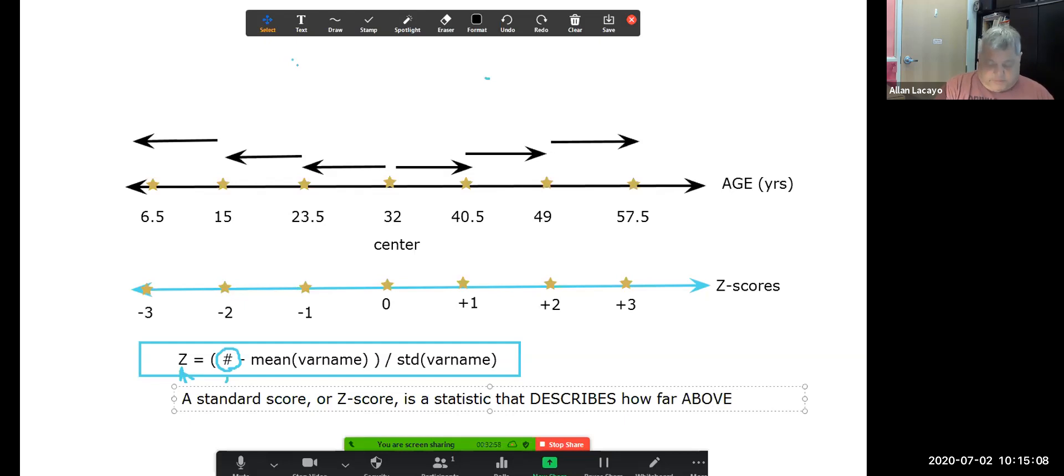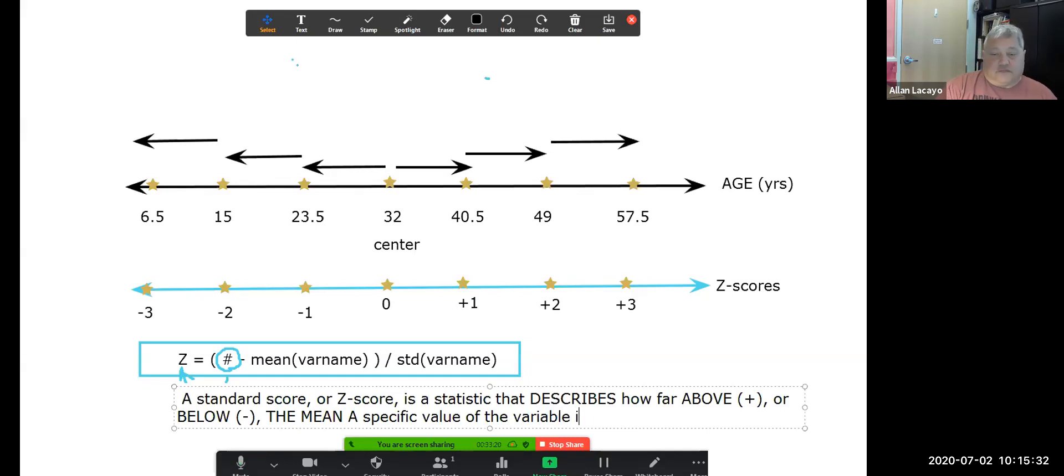—above, if it's a positive z-score, or below, if it's a negative z-score, the mean a specific value of the variable is location-wise.